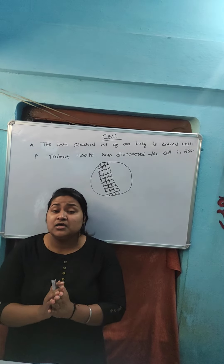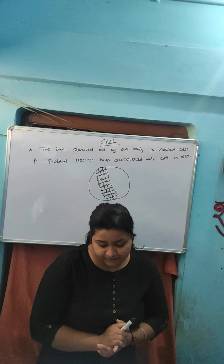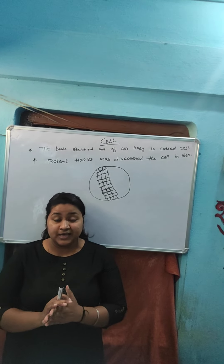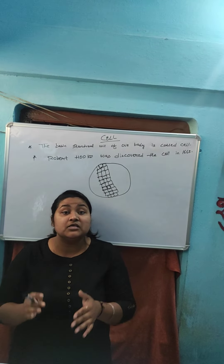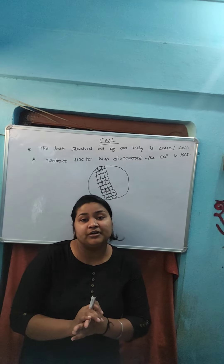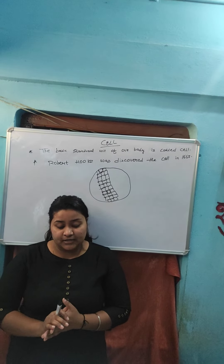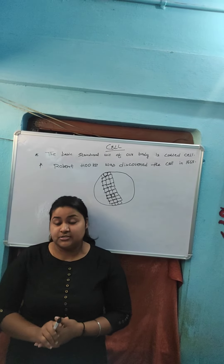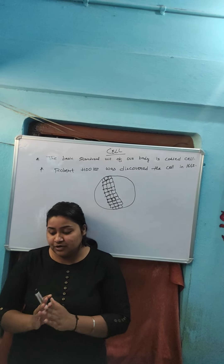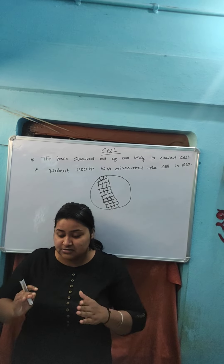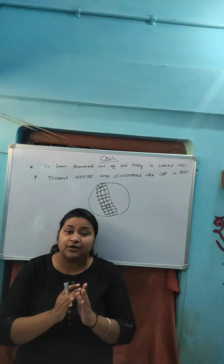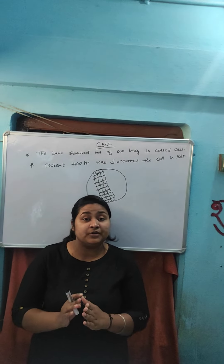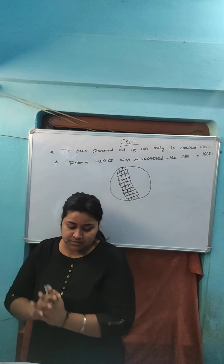The next topic is the number of cells. There are millions of living organisms on this earth; they are of different sizes and shapes. Their organs also vary in shape, size, and number of cells. The human body has trillions of cells which vary in shapes and sizes. Different groups of cells perform different varieties of functions.